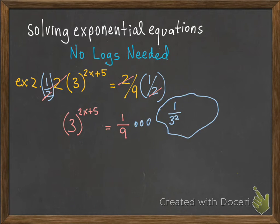However, I need the base to be 3, and the base is not 3 here. So I can rewrite this using the property of negative exponents as 3 to the negative 2 power.